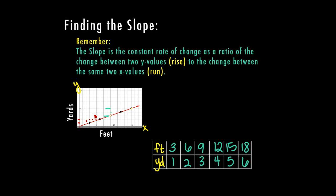So that is one, two, my rise is two. My run is now one, two, three, four, five, six.